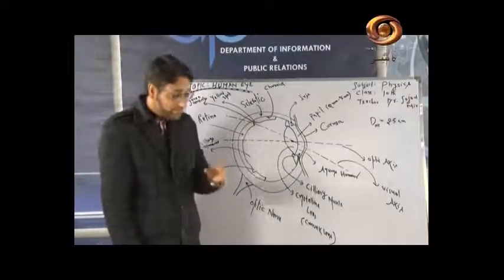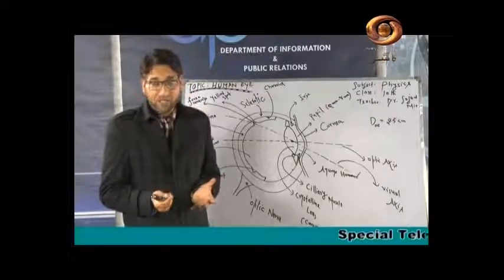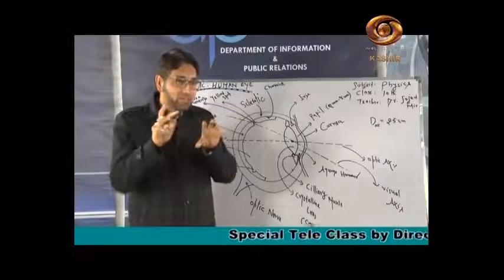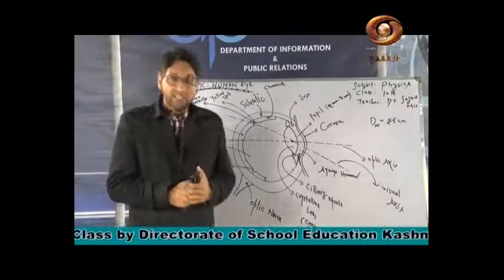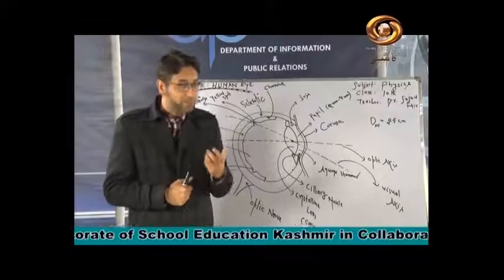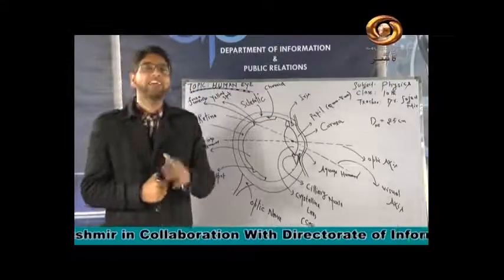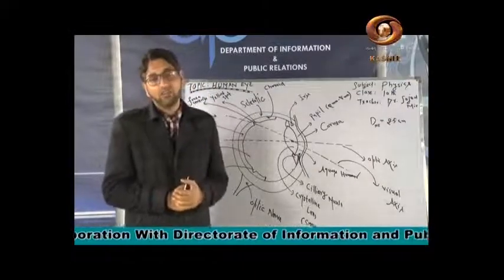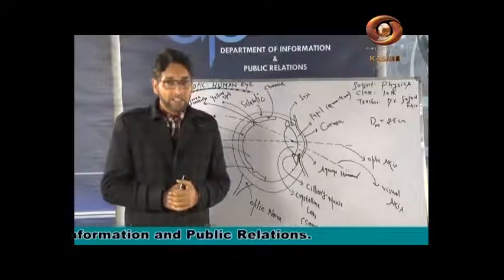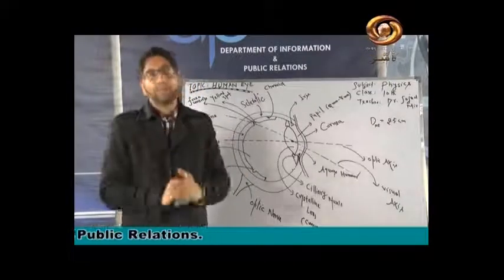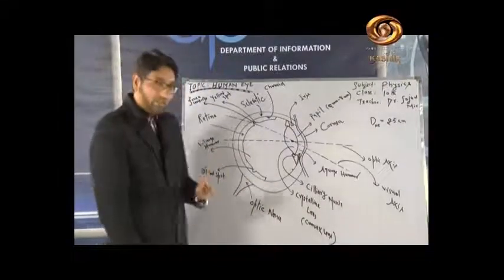There is atmospheric pressure acting on the eye from outside. Nature has provided a fluid inside the eye whose pressure balances the atmospheric pressure, maintaining the spherical shape of the eye. Without this fluid, the eye shape would collapse.